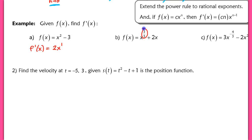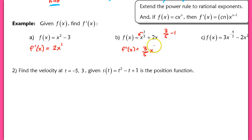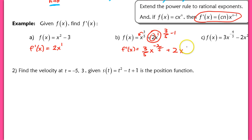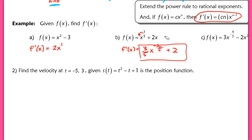Now with a rational exponent — it doesn't matter that the exponent is a fraction, we still apply the power rule. For f(x) = x^(3/5), f prime of x = (3/5)x^(3/5 − 1) = (3/5)x^(−2/5). For the term 2x, which is x to the first power, using the power rule gives 2 times x^(1−1) = 2 times x^0 = 2. Alternatively, since 2x is linear, its derivative is simply the slope, which is 2.